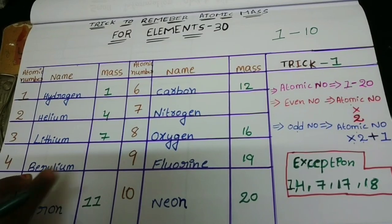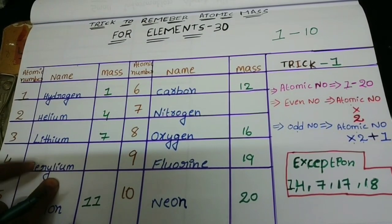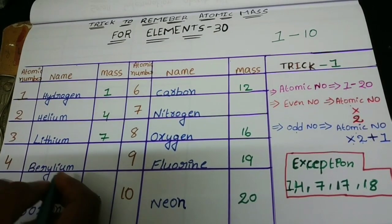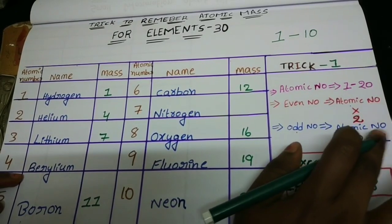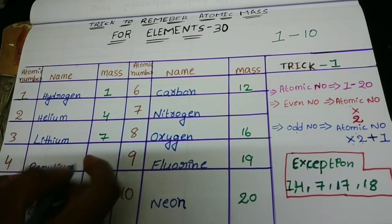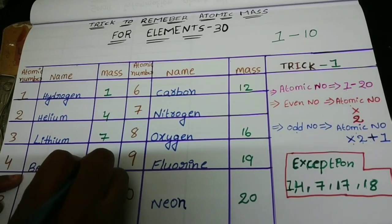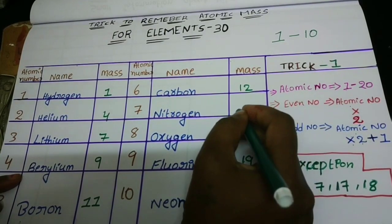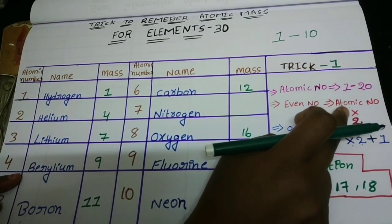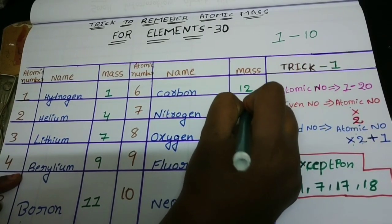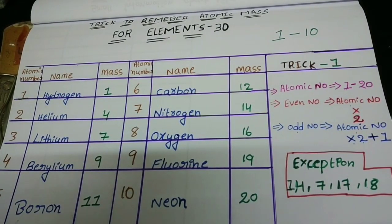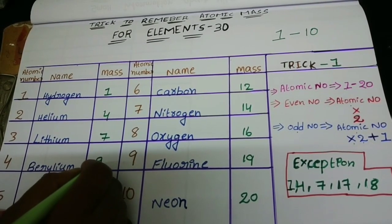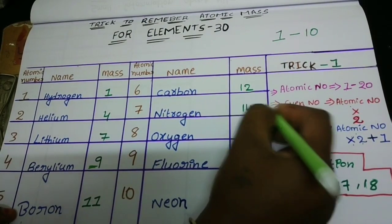So the exceptions here are beryllium and nitrogen. Beryllium's atomic number is 4 (even), but it follows the odd number rule: 4 × 2 = 8, 8 + 1 = 9. So 9 is the beryllium atomic mass. Nitrogen follows the even number rule: atomic number 7 × 2 = 14. So 14 is the nitrogen atomic mass. These two are the exceptions for elements 1 to 10.